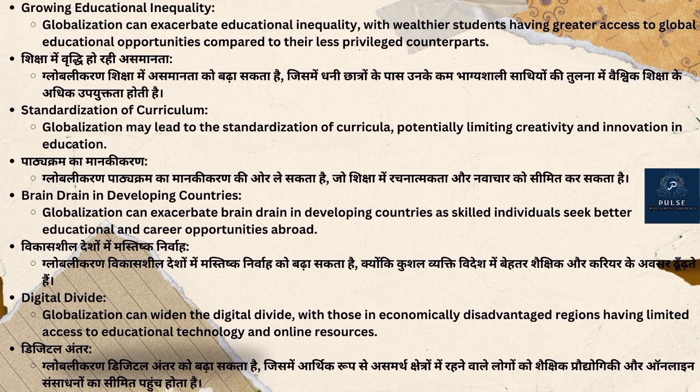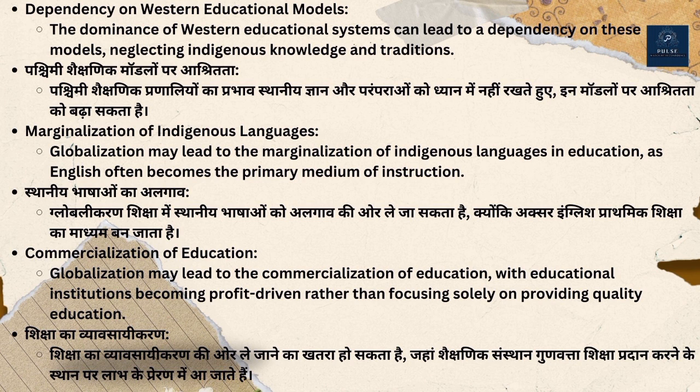6. Dependency on Western Educational Models: The dominance of Western educational systems can lead to a dependency on these models, neglecting indigenous knowledge and traditions. पश्चिमी शैक्षणिक मॉडलों पर आश्रितता: पश्चिमी शैक्षणिक प्रणालियों का प्रभाव स्थानीय ज्ञान और परंपराओं को ध्यान में न रखते हुए इन मॉडलों पर आश्रितता को बढ़ा सकता है।